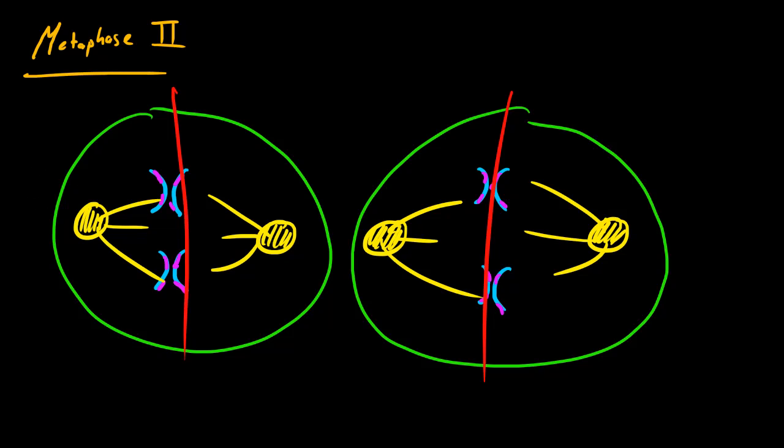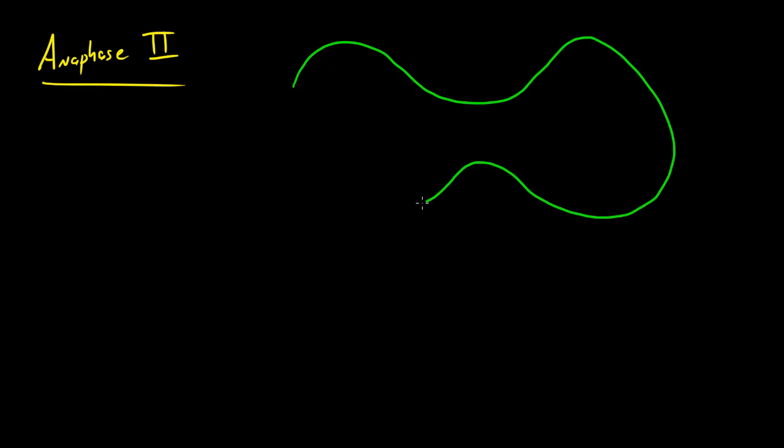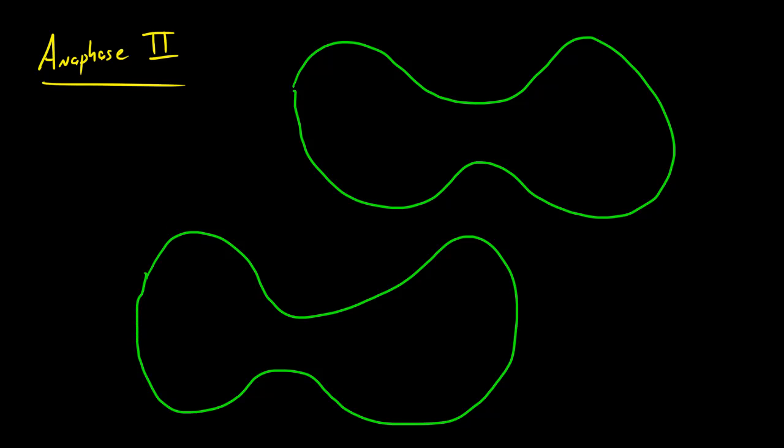So after this we move on to anaphase 2. Let me go ahead and draw my cell before I start talking, or my two cells. So let me draw one right here. Okay so we have some deformed looking cells right here but good enough, who cares how good they look.